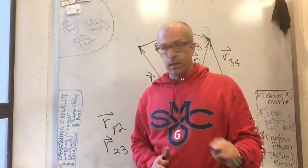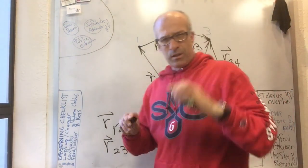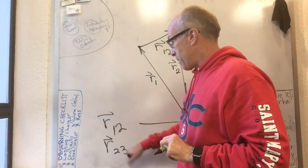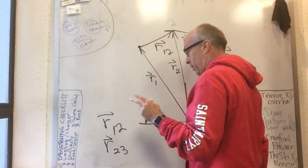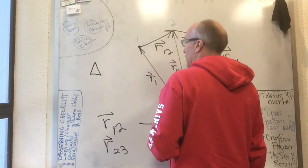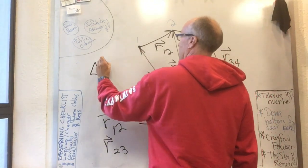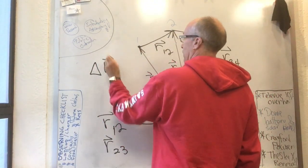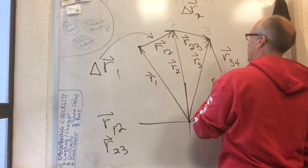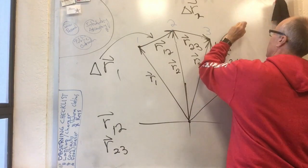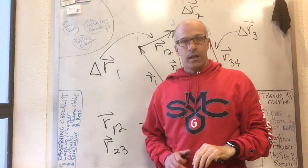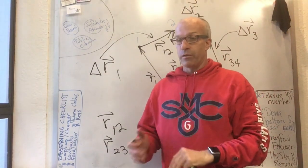Knight likes to use the symbol delta. This is a very common way to do this. I'm noticing reading Knight very carefully that he tends to call this delta r1 and he calls this delta r2 and he would call this delta r3, meaning it's a change in r or a difference in r.